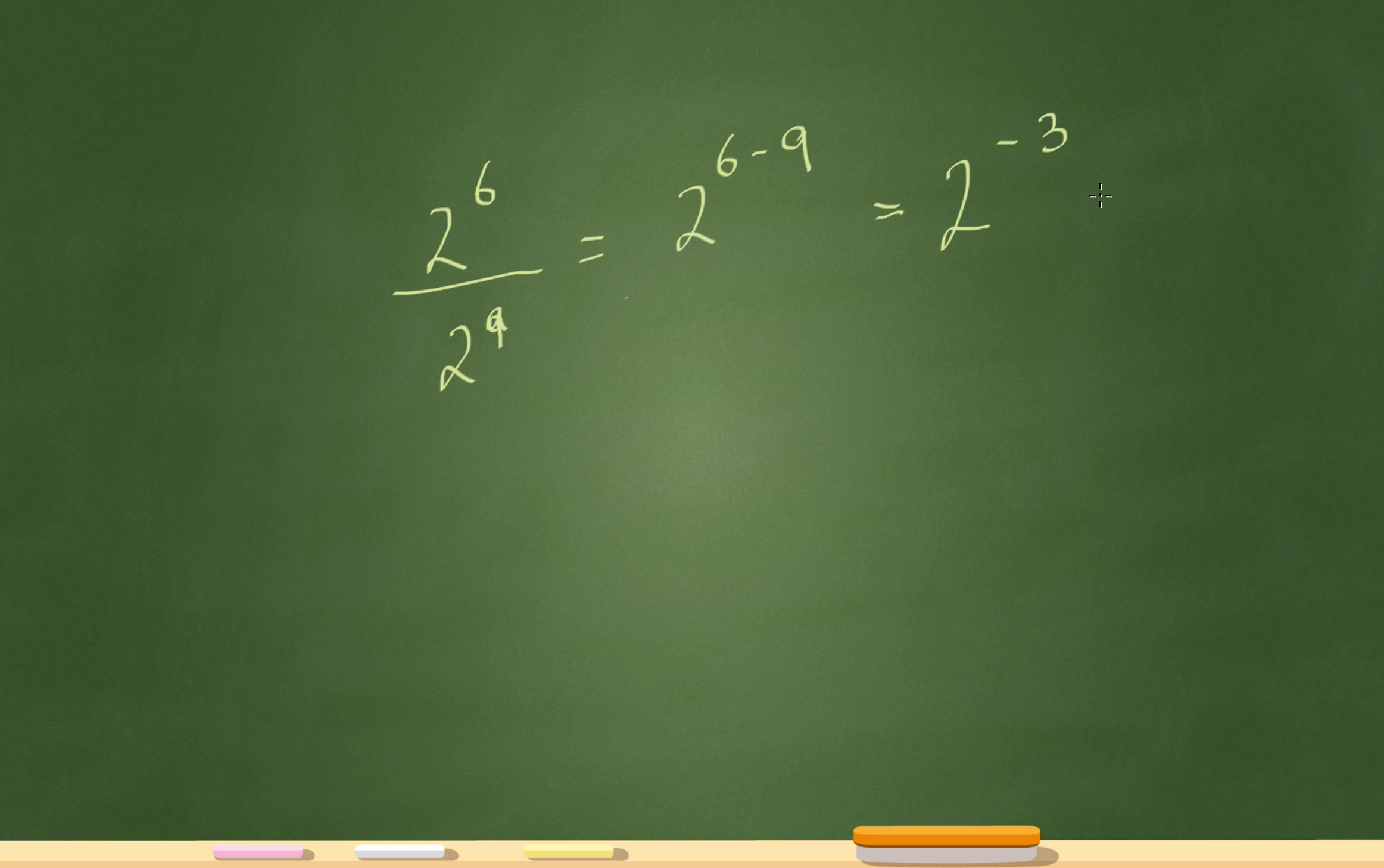Now if I have a negative exponent, I can rewrite that as a positive in the denominator. So that is the same thing as 1 over 2 cubed. And 2 cubed is the same thing as 8, so that makes it 1 over 8. That's my final answer.